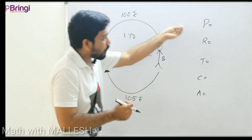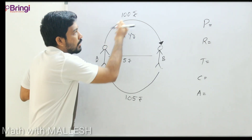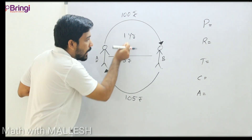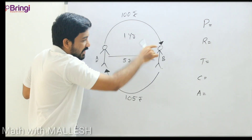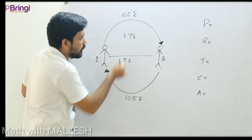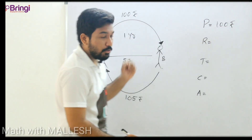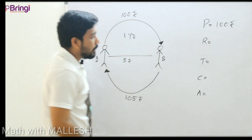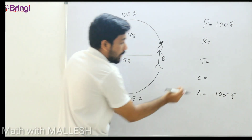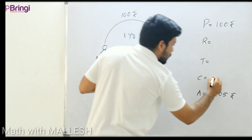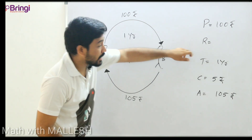To understand the terms P, R, T, C, and A, we are going to use a small example. Person A gave 100 rupees to Person B for a time period of one year. After one year, Person B returned 105 rupees. Here, the principal is 100 rupees, the amount is 105 rupees, and the compound interest is 5 rupees.